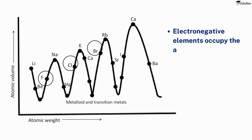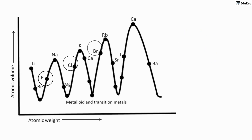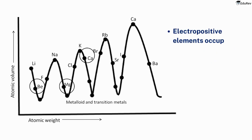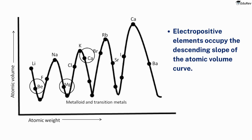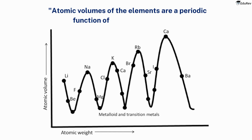The electronegative elements occupy the ascending slope of the atomic volume curve, while the electropositive elements occupy the descending slope. Overall, Lothar Meyer plotted atomic volumes against atomic weights and observed that elements with similar physical properties occupied a similar position in the curve, concluding that atomic volumes of the elements are a periodic function of their atomic masses.